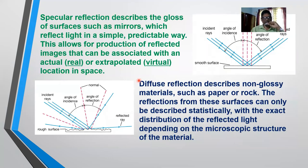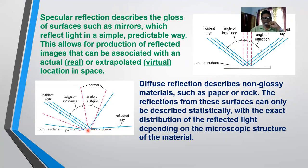Specular reflection describes glass or mirror surfaces that reflect light in a simple, predictable way, allowing us to immediately trace the reflected ray and observe a clear image. In diffused or irregular reflection, non-glossy materials such as paper or rock reflect light in a way that can only be described statistically, where the exact distribution of reflected rays depends on the microscopic structure of the material — every point of incidence matters here.